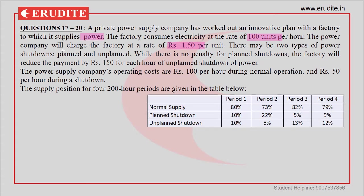There may be two types of power shutdowns: planned or unplanned. There is no penalty for planned shutdown, but the factory will reduce the payment by ₹150 for each hour of unplanned shutdown. We need to understand this scenario clearly.